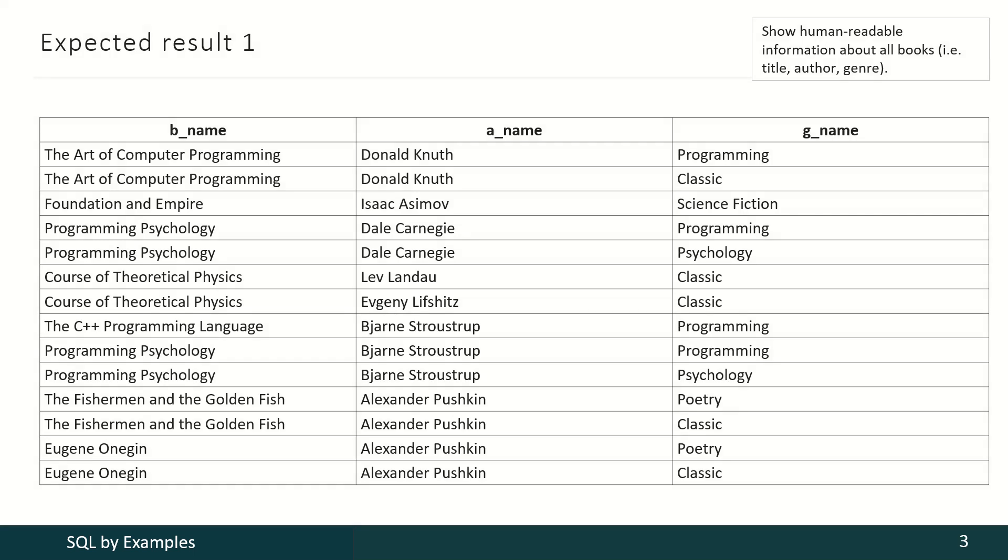You may see that in some cases, for instance when a book has several genres, the information about that book and about the author is duplicated. This is not quite convenient, but for now let's stay with this result and see how to achieve it. Later in our course, we shall see how to achieve another, more convenient result.